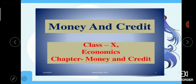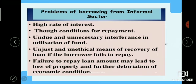The chapter is Money and Credit. We start with the topic of problems of borrowing from the informal sector. In the last video we saw that formal sector loans are better than informal sector loans because everything is mentioned in a legal way. In the informal sector, problems include high rate of interest, unfixed repayment conditions, unnecessary interference in utilization of funds, and unethical means — such as capturing your property if you fail to repay.